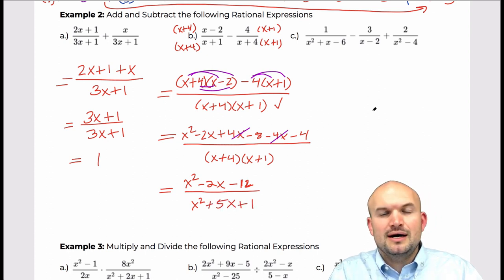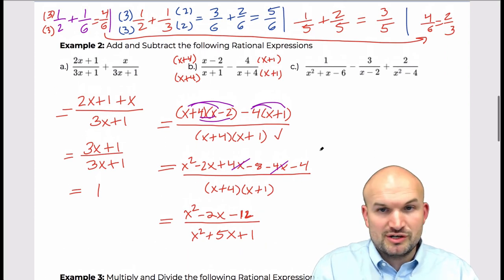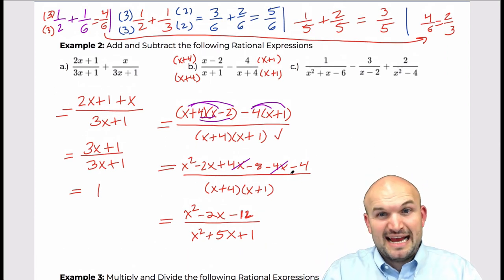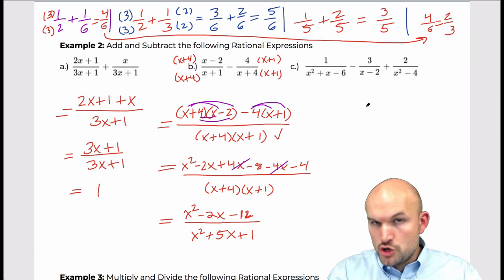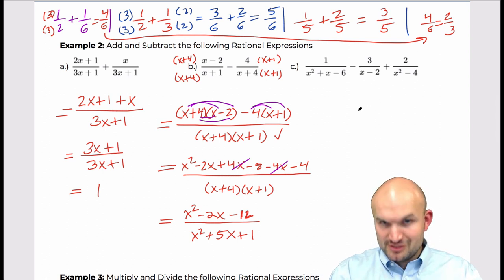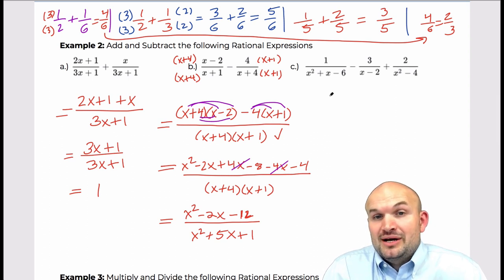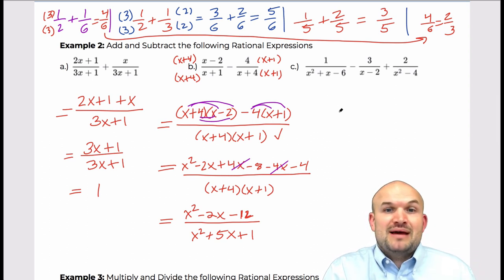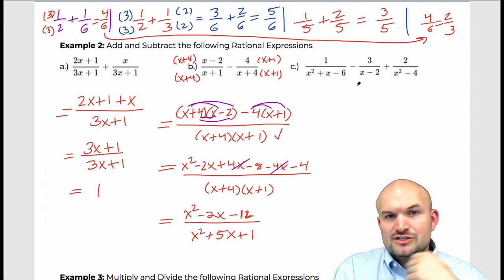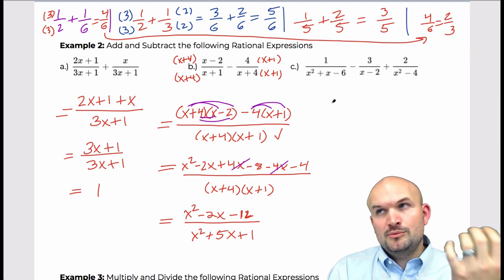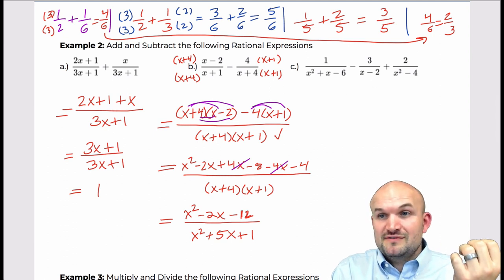In the next example, nobody wants to multiply all of these to get a common denominator — that would make things more difficult. In math we're trying to make things simple. So when we see a trinomial, we want to factor it first and see what that gives us.